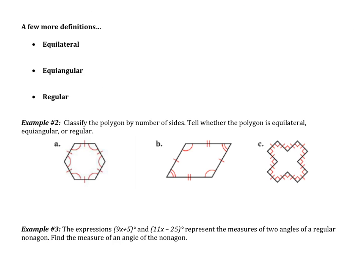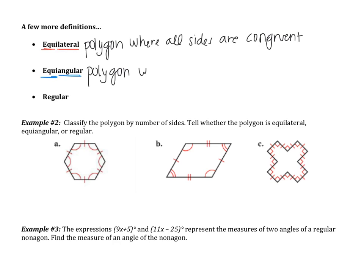So we've got three more definitions. An equilateral figure is a polygon where all sides are congruent. So a polygon where all sides are the same length. That should make sense. Equi, that's equal. Lateral is the sides. Equi-angular. Equi, same. Angular, angles. So a polygon where all angles are congruent.